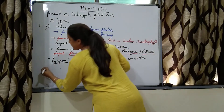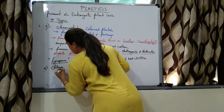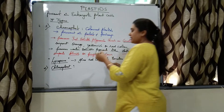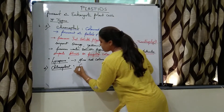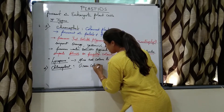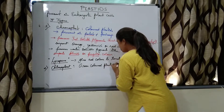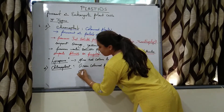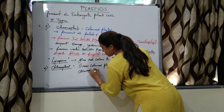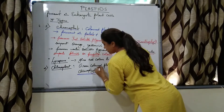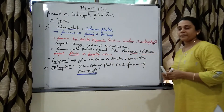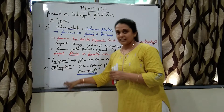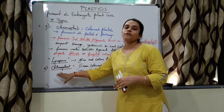The second plastid is chloroplast. Chloroplast is a green colored plastid due to the presence of chlorophyll. Chlorophyll imparts green color, so the plastid is called chloroplast. We will study the detailed structure of chloroplast after discussing all three types.